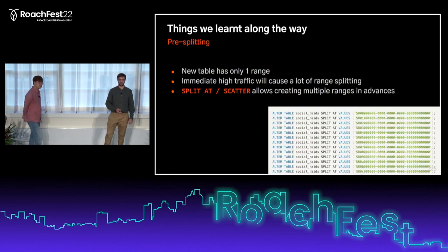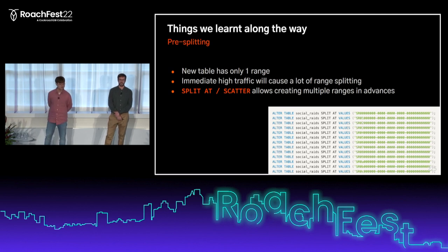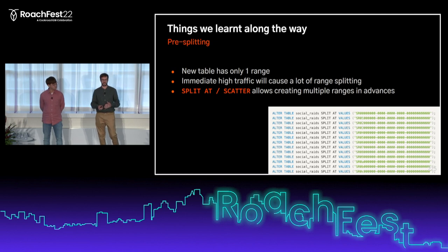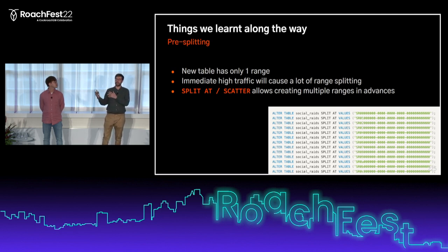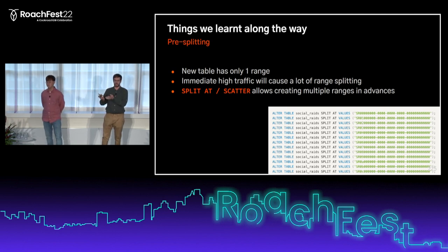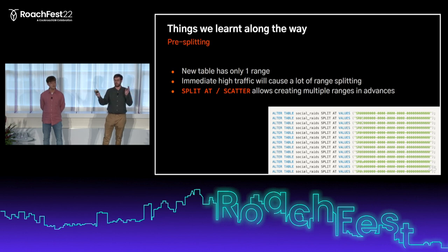A few tips and things we learned. When you create a new table, it starts with one range. As it gets data, the range splits automatically and gets distributed to multiple ranges. But when you know in advance you'll have a lot of data coming — which is always the case when we release a new feature — you can pre-split those ranges in advance so it's already distributed before you get any data. That's the ALTER TABLE ... SPLIT AT command: highly recommended.